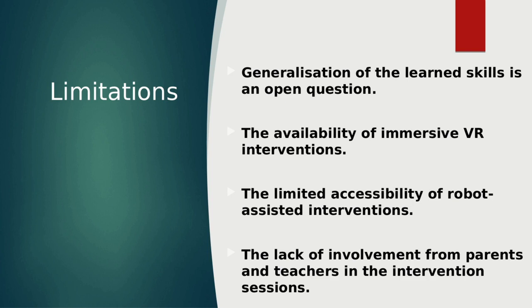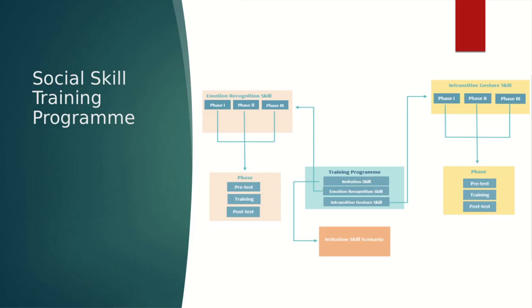A limited number of studies took place in real-life settings such as the child's home or school. The idea of my PhD is developing a tool that employs a virtual robot to interact with the child in a social skill training program, ensuring transition to being a parent- or teacher-managed tool. The developed environment is a desktop virtual reality built using the Unity 3D game engine, developed in two languages — English and Arabic — as the evaluation process is conducted between the UK and Egypt. The developed training program targets three social skills: imitation, emotion recognition, and intransitive gesture.